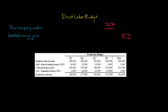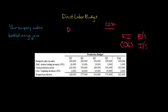When we put together our budgeted balance sheet, and also to calculate our cost of goods sold when we put together our budgeted income statement. Because direct labor is a product cost, just like direct materials and manufacturing overhead. So we need it to figure the ending inventory balance and the cost of goods sold.